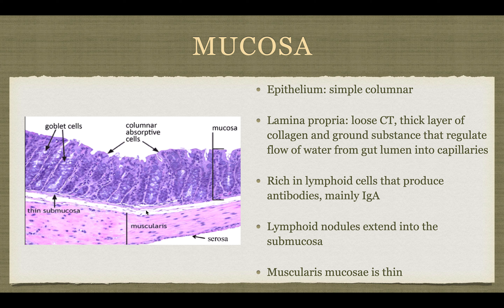The mucosa is made out of simple columnar cells lying on the lamina propria. This lamina propria is unique because it has a really thick layer of collagen and ground substances to regulate the flow of water, since the large intestine is more responsible for water reabsorption. There are a lot of lymphoid cells that make IgA, and the lymphoid nodules extend into the submucosa, but they don't make Peyer's patches — that's only in the small intestine.